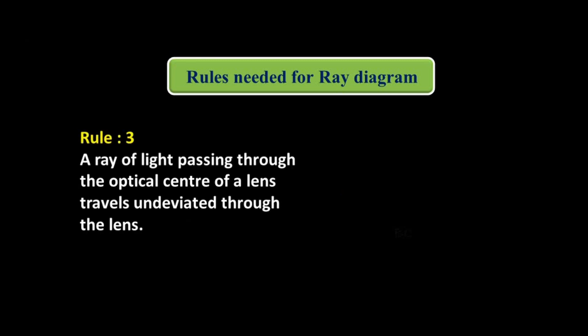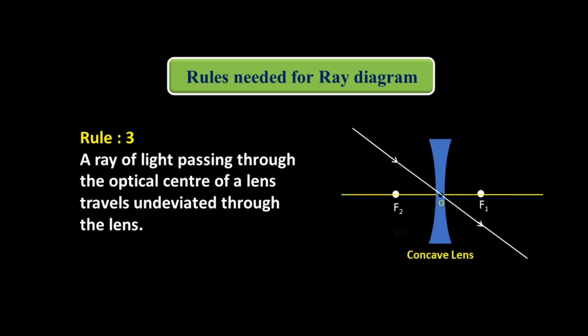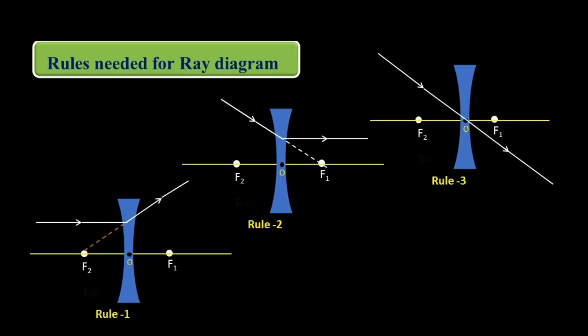Rule number 3: a ray of light passing through the optical center of a lens travels undeviated through the lens — same rule as for the convex lens. So these are the three rules: if incident ray is parallel to the principal axis, after refraction it diverges and appears to come from focus F2; if the incident ray is directed toward the focus, after refraction it becomes parallel; if passing through the optical center, it passes without deviation.